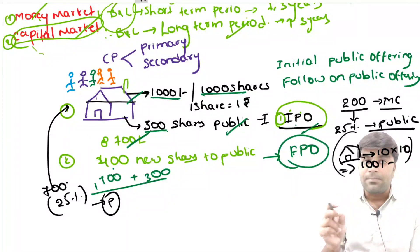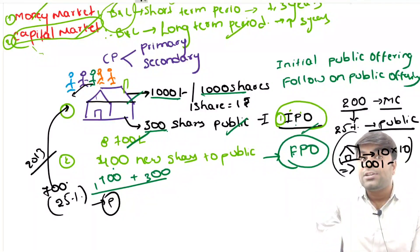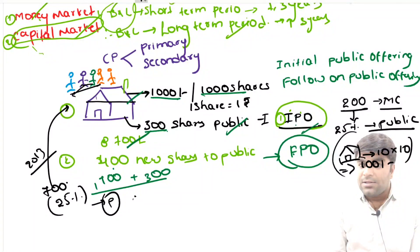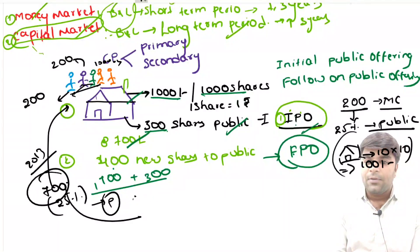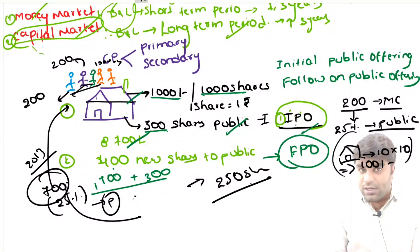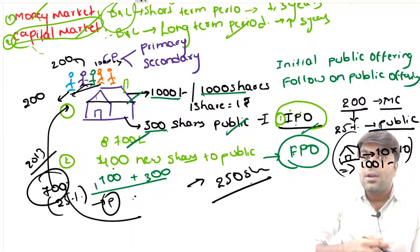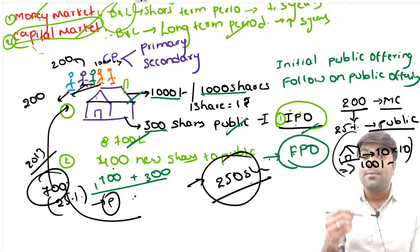We call it the minimum public shareholding requirement that a company needs to maintain with the public. When these SEBI norms came around 2013, many owners had to sell their shares to the public to fulfill them. Imagine one owner is holding 200 shares, another is holding 200 shares, and the rest hold 100 each — cumulatively 700 shares. The company wants to sell at least 250 shares to the public so that the 25% SEBI norm is fulfilled. So one guy sells 100 out of his 200, another sells 100, and a third sells 50 — totaling 250 shares sold to the public.